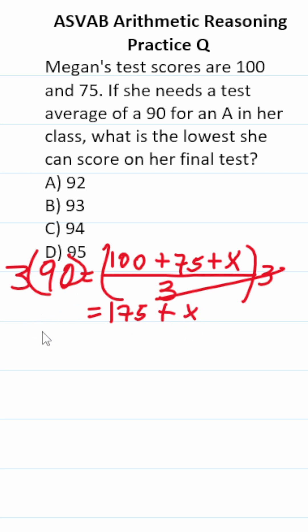90 times 3. Well, 9 times 3 is 27, so 90 times 3 is going to be 270.